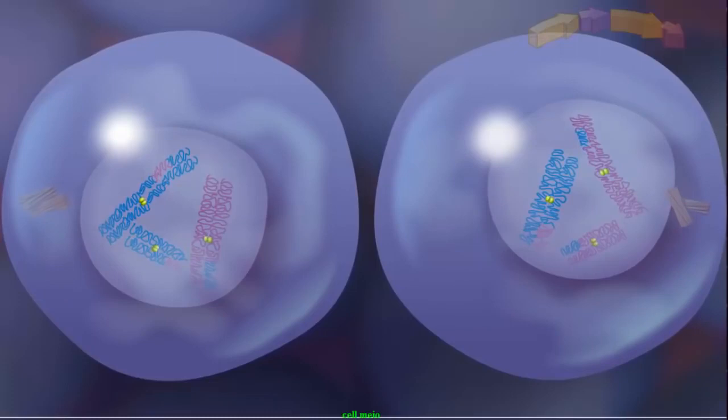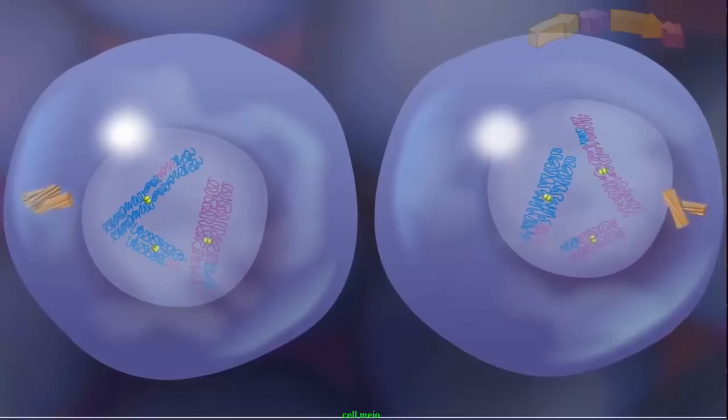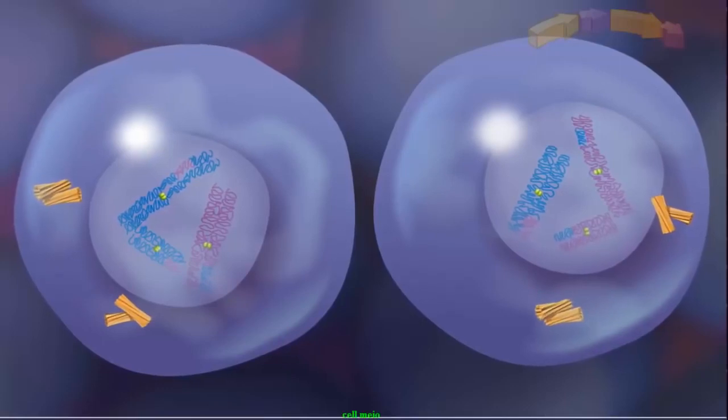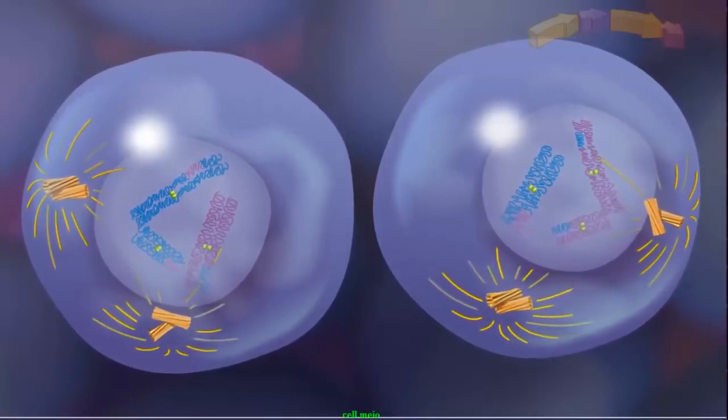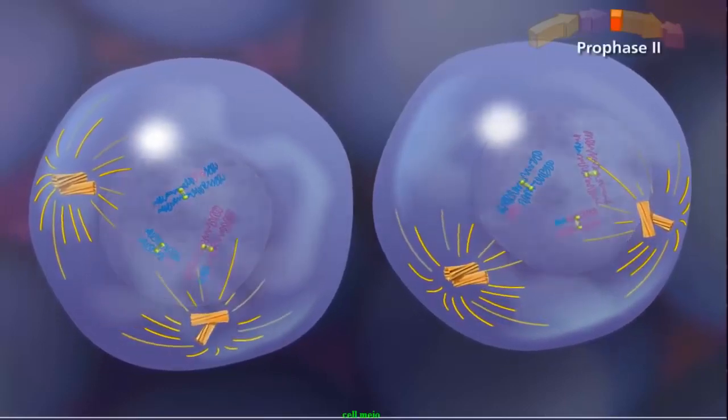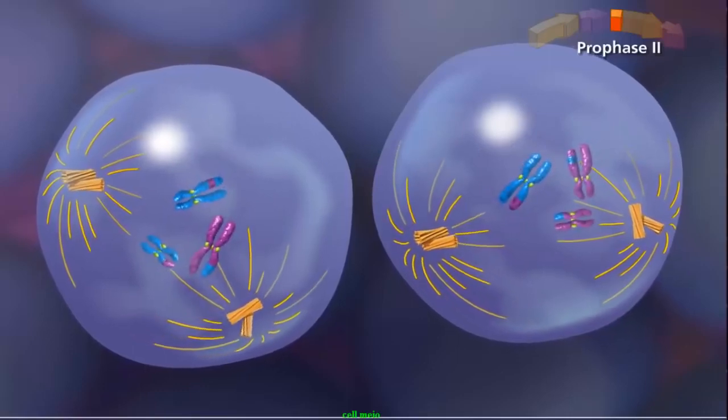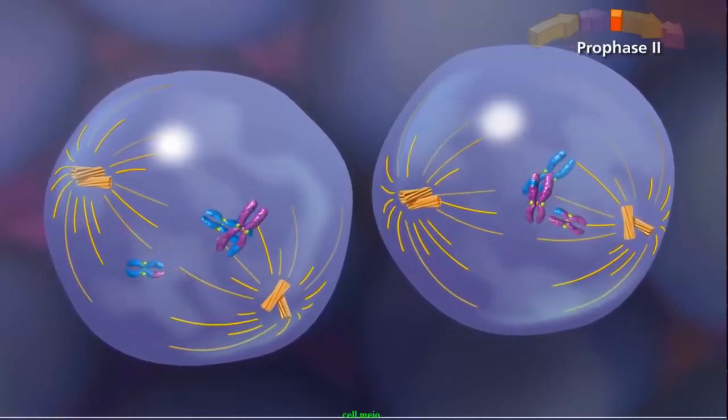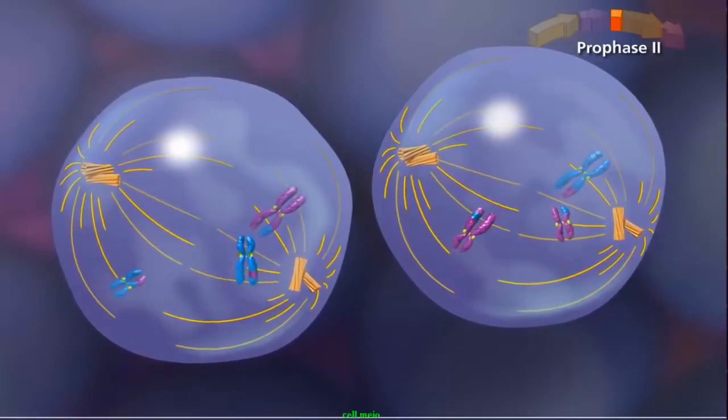Since the final product of meiosis I is two haploid cells, meiosis II begins without the chromosomes going through another round of DNA replication. Centrioles again duplicate and begin moving to opposite poles of each cell. In prophase II, the sister chromatids condense while the spindle starts to form as the nuclear envelope disappears.